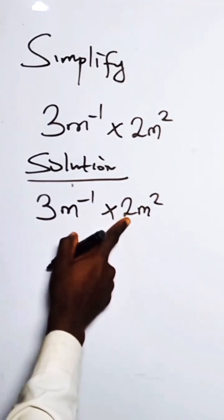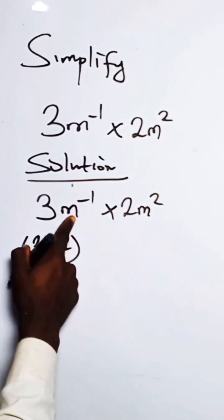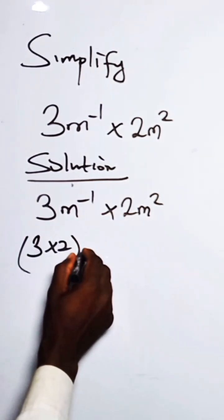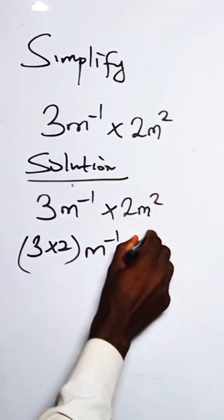So let us multiply the numbers. So we have this as 3 times 2. So let's multiply the null letters. So we have this as m raised to the power minus 1 times m raised to the power 2.